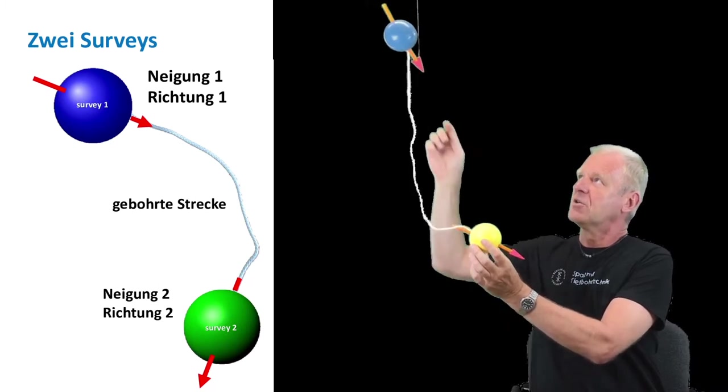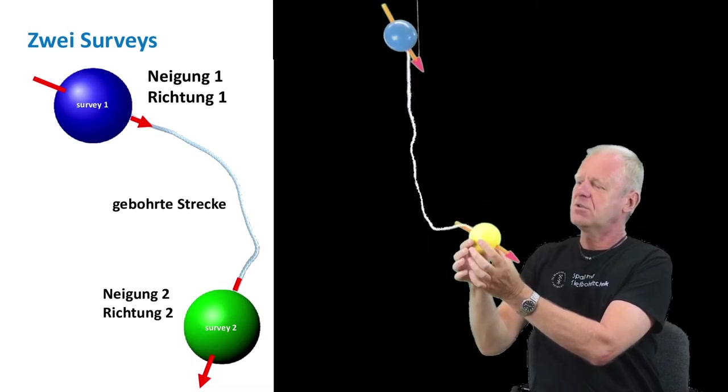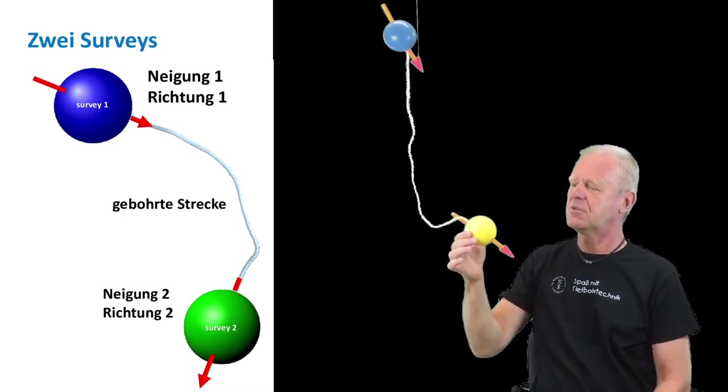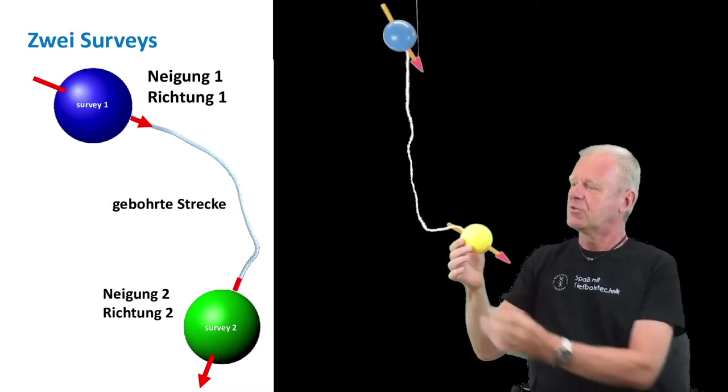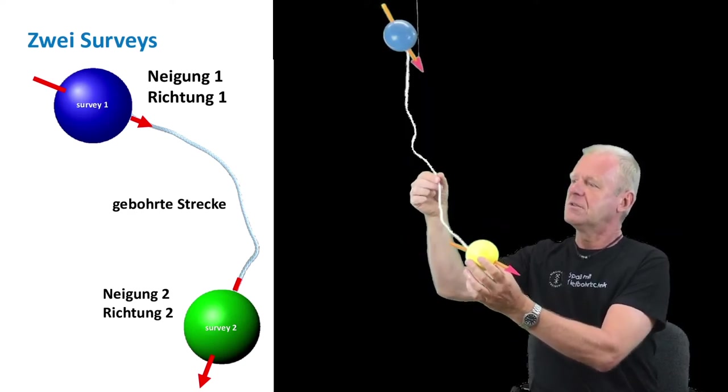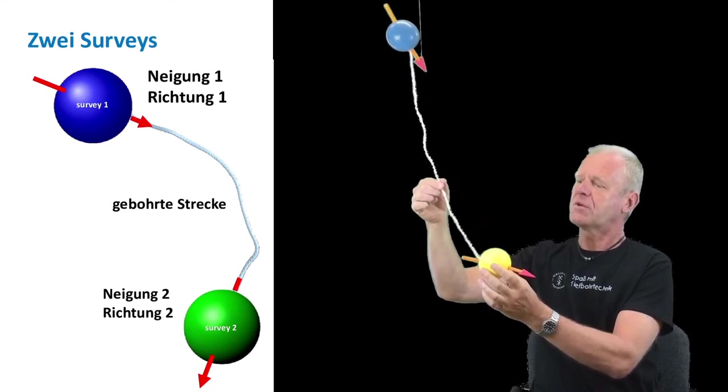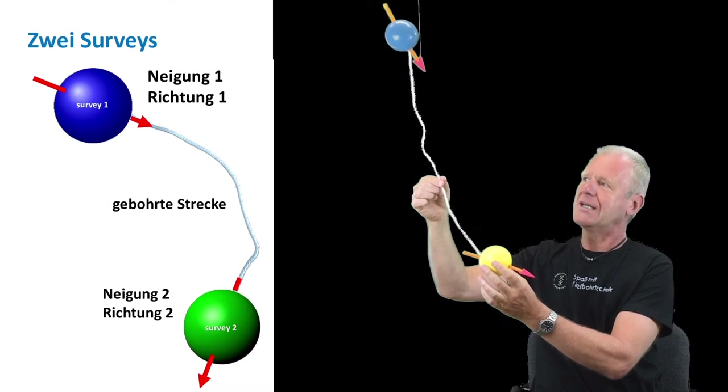We only measure the inclination and the direction of the borehole at certain points. I have two measuring points here, a blue one and a yellow one. The arrow shows us the inclination and the direction at each point. The rope between the two points represents the distance drilled between the two measuring points. Now you can see the problem.